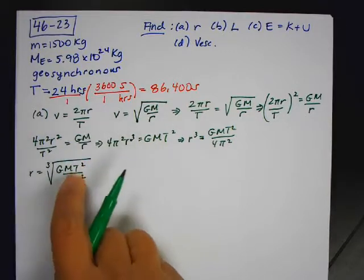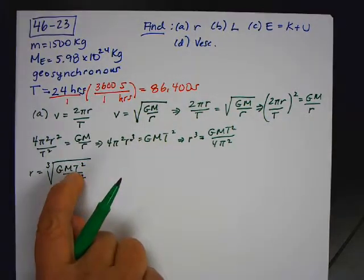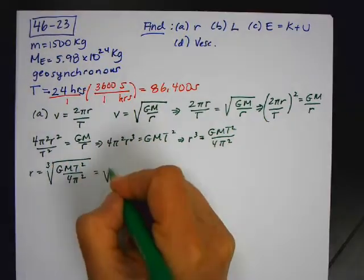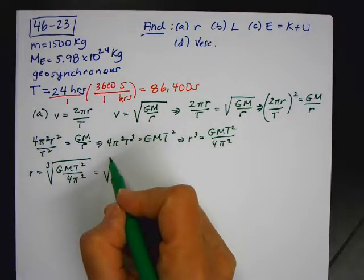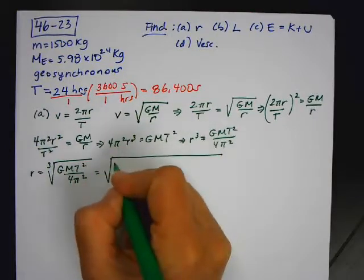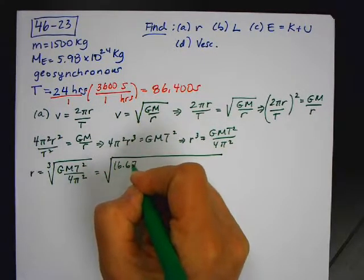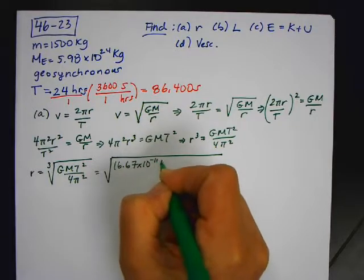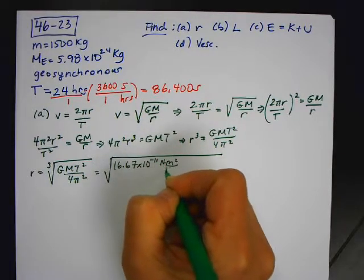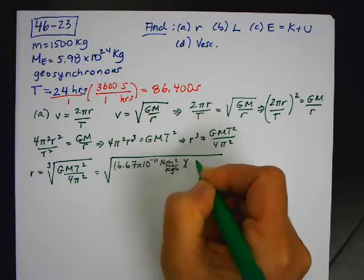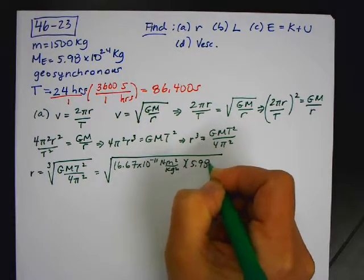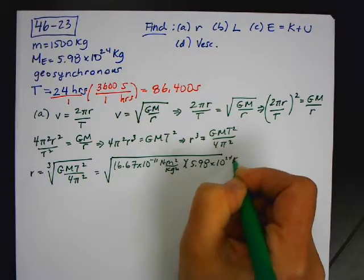Now, normally, for a planet, you use capital M. And for a satellite, you use lowercase m because the uppercase is larger significantly. So now I have universal Newtonian gravitational constant 6.67 times 10 to the negative 11 newton meter squared per kilogram squared times 5.98 times 10 to the 24, the mass of the Earth,